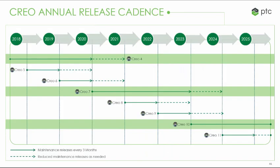Our annual release schedule: the next major release is Creo 7 — shown as the green bar for major releases. We have releases in between as well. The dotted line represents the reduced maintenance release, and the solid line is the full maintenance release every three months. So if you had any questions about what's coming when, this might help you out.